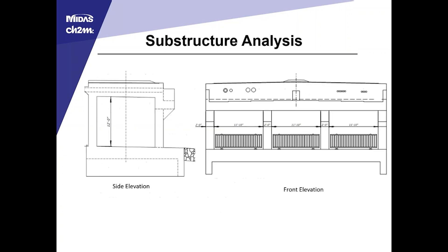A side elevation and a front elevation of the structure show the four columns. The side elevation shows the back wall on the left, the columns on the right, and in the transverse direction that torsional eccentricity.